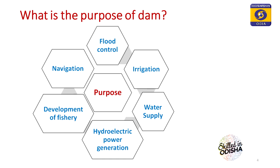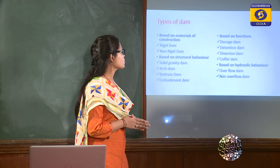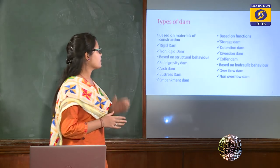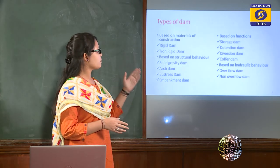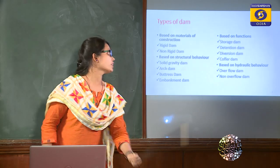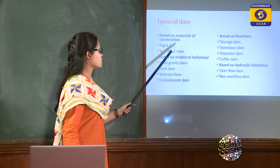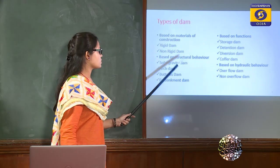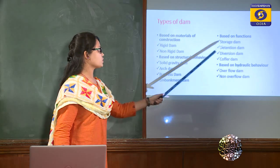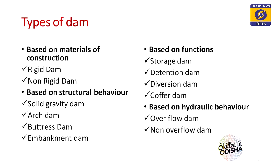Now let us look at the types of dams. There are different types of dams based upon various parameters: based upon material of construction, based upon structural behavior, based on functions, and based on hydraulic behavior.